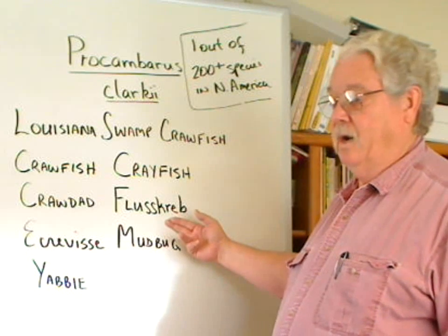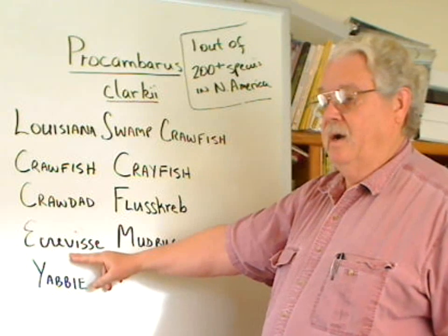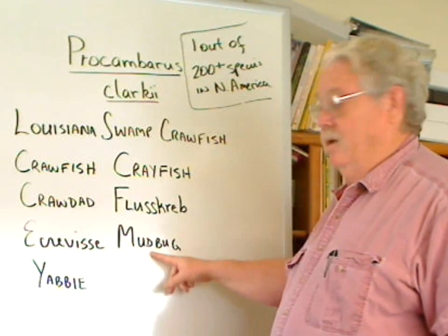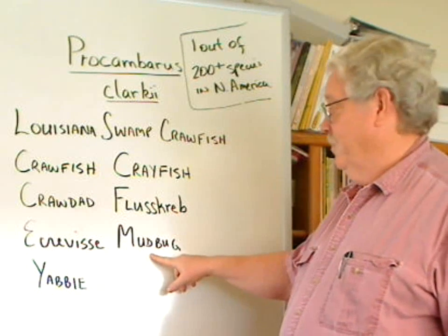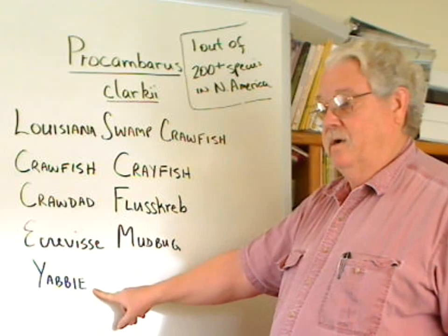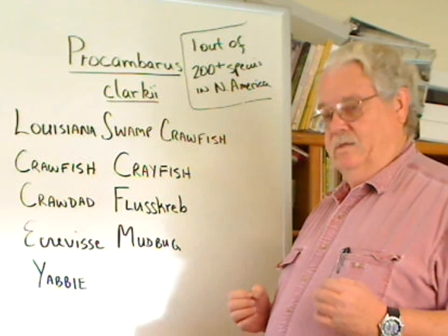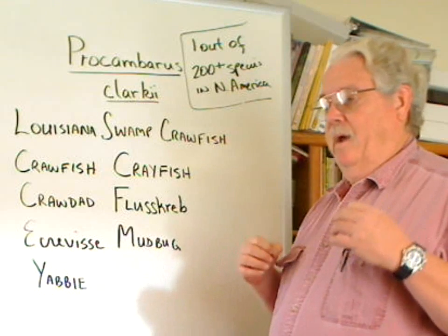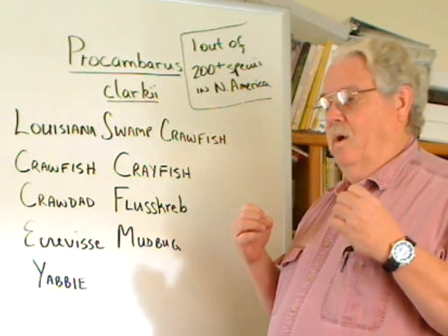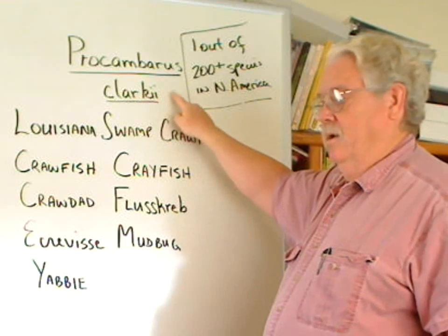Flusskreb is the name for the same kind of organism in Germany. Ecrevis for the same kind of organism in France. Mudbug is a neat little name for them down in Louisiana, and Yabby is the name for them in Australia. So in order to communicate and know exactly what organism we're dealing with, no matter what country, no matter what kind of work we're doing, we need the scientific name.